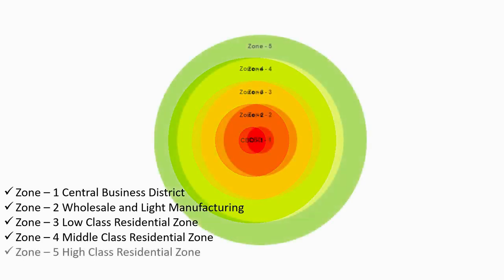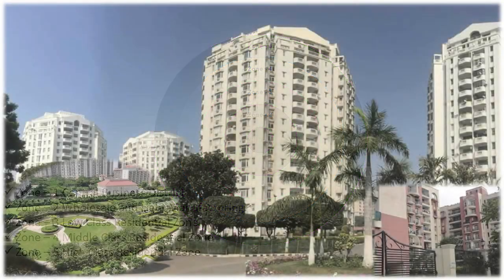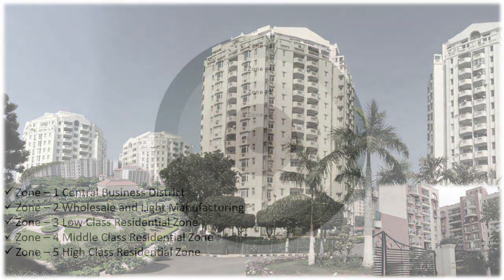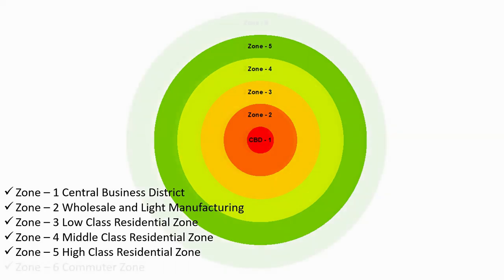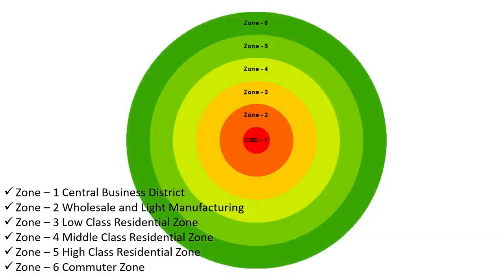Zone Five: High Class Residential Zone. In this zone, rich people reside who have their own means of transportation. This zone is very less densely populated and is generally free from pollution.